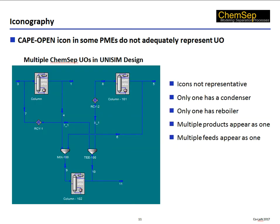The next set of slides concerns flowsheet appearance — specifically the lack of realism because of the use of generic CAPE-Open icons in some systems. This image shows a flowsheet in Unisim Design that contains three ChemSat column models. However, none of the icons faithfully captures the appearance of any of the individual columns. Only one of these columns has a condenser, only one has a reboiler, and not the same one that has the condenser. Each column has multiple product streams and multiple feeds, but they appear in all cases as only one stream.